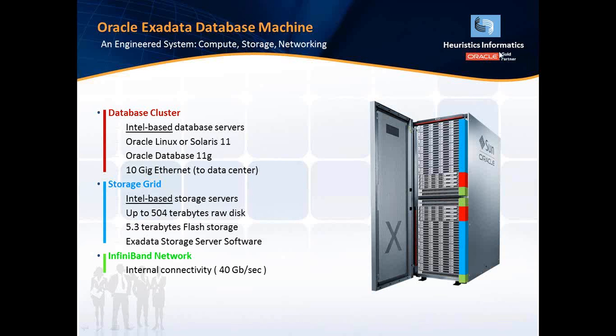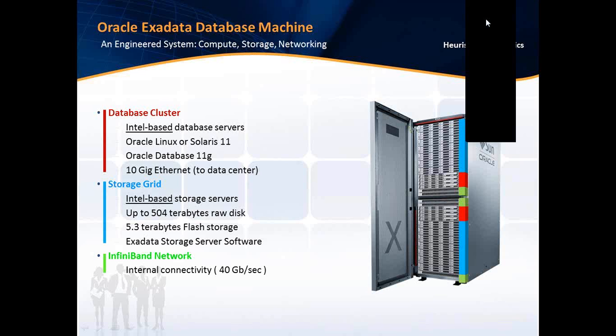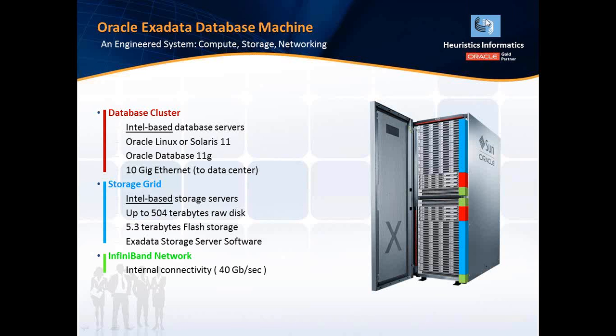The underlying InfiniBand backbone of the Exadata system. As you can see, we've got the database cluster, which is the first piece, running Intel servers on Linux or Solaris and running database 11G or 12C. You've got the 10G Ethernet fabric that you can use to access the Exadata from other servers or from your client machines. And then there's a whole storage grid which can give you as much as 500TB of raw disk space plus several TB of flash storage.